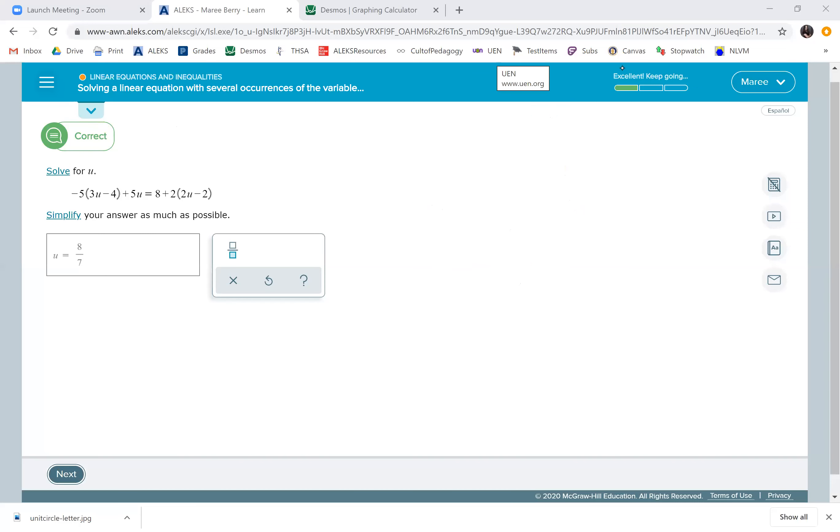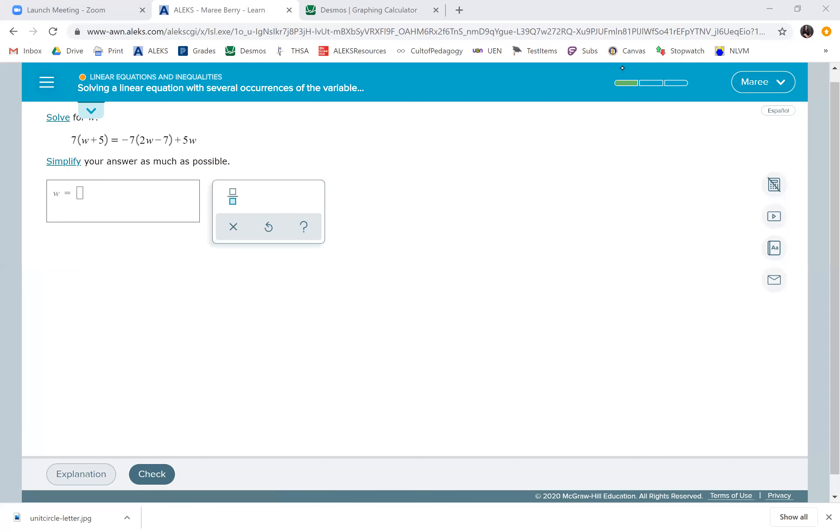We've got to watch our signs - that's key. I'm known to miss that sometimes too. We'll do distributive property first. 7 times w is 7w, plus 7 times 5 is 35, equals negative 7 times 2 which is negative 14w, then plus because we have two negatives, so plus 49 plus 5w. Negative 14 plus 5 gives you negative 9w plus 49 on the right side, and 7w plus 35 on the left.